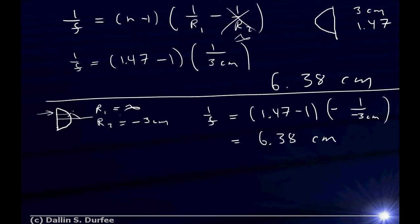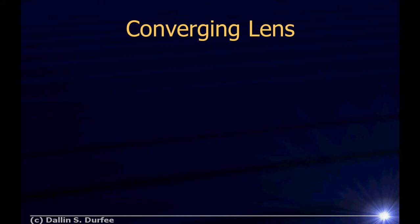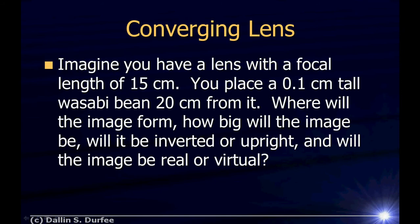There's a lot of logic we can apply to check our answers — for instance, what if the lens were more curvy or more flat? Would it bend light more or less? Now imagine a lens with a focal length of 15 centimeters. We place a 0.1 centimeter tall wasabi bean 20 centimeters from it. Where will the image form? How big will it be? Will it be inverted or upright, and will the image be real or virtual? This is the same problem we worked with mirrors, only now it's a lens.